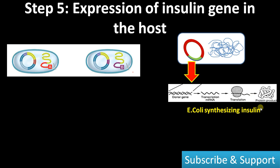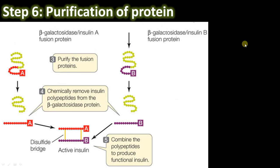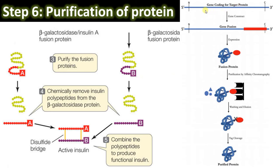Step six: purification of the protein. We now have, in two different cultures, the beta-galactosidase–insulin A fusion protein and the beta-galactosidase–insulin B fusion protein. This beta-galactosidase acts as a tag protein — a way of tagging the gene of interest. We lyse the cells, purify the protein, and pass it through an affinity chromatography column loaded with antibodies against beta-galactosidase. Beta-galactosidase binds to these antibodies, and the fusion protein is later eluted, giving us only the beta-galactosidase–insulin fusion protein.